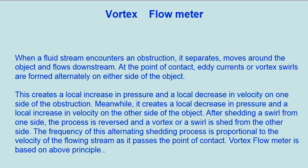After shedding a swirl from one side, the process is reversed and a vortex or swirl is shed from the other side. The frequency of this alternating shedding process is proportional to the velocity of the flowing stream as it passes the point of contact. The Vortex Flow Meter is based on this principle.